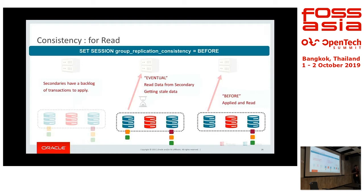There are options: before, after, and before-and-after. 'Before' means when your application queries data, it must be applied before you read it — giving you consistent, updated data. 'After' means when you write data, it is written to server A, B, and C, then commits — like synchronous replication. MySQL is very flexible; it is not just async or sync — it is designed per application.